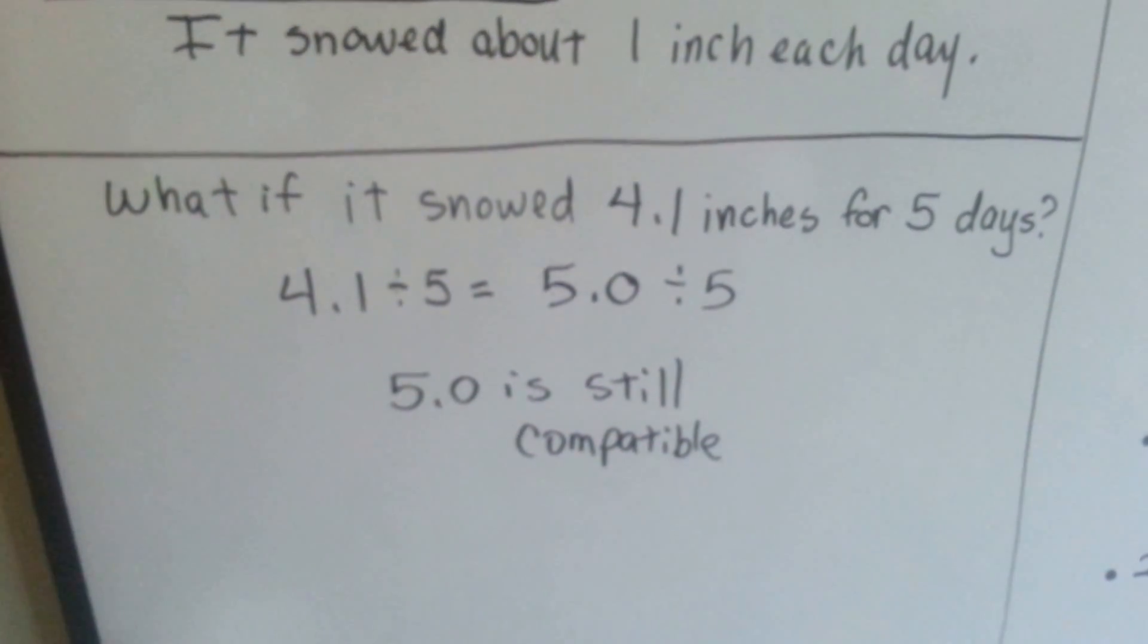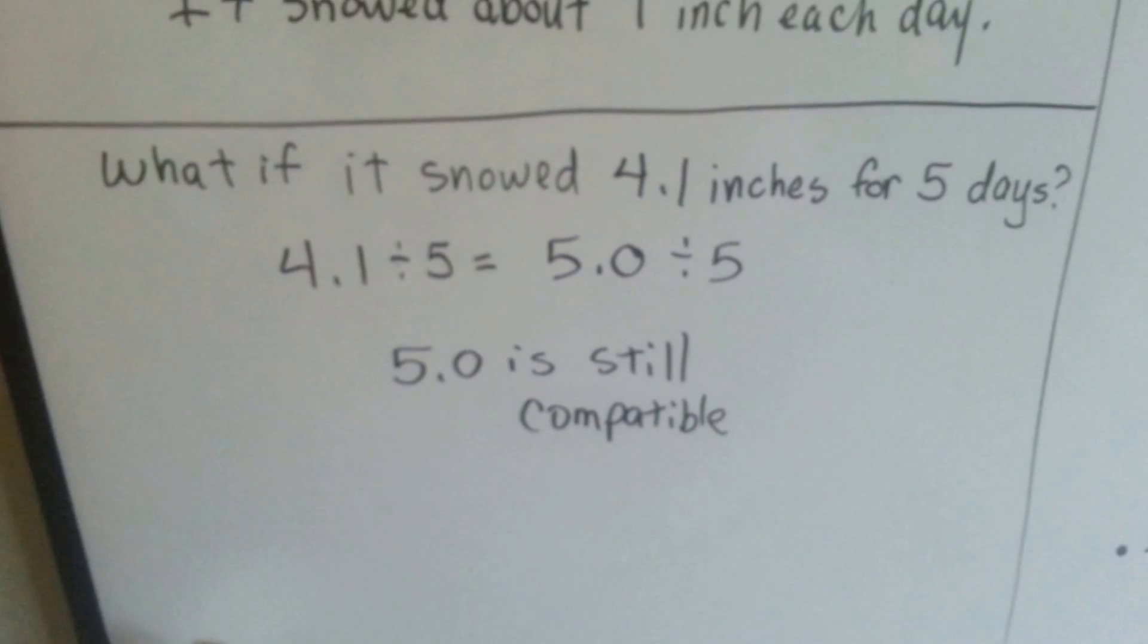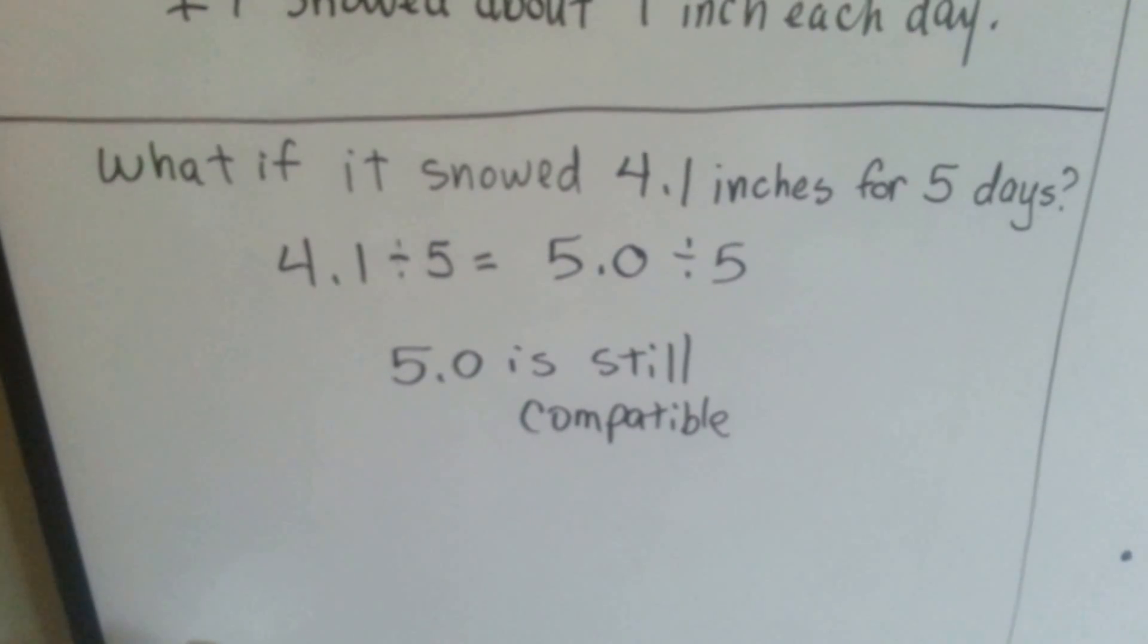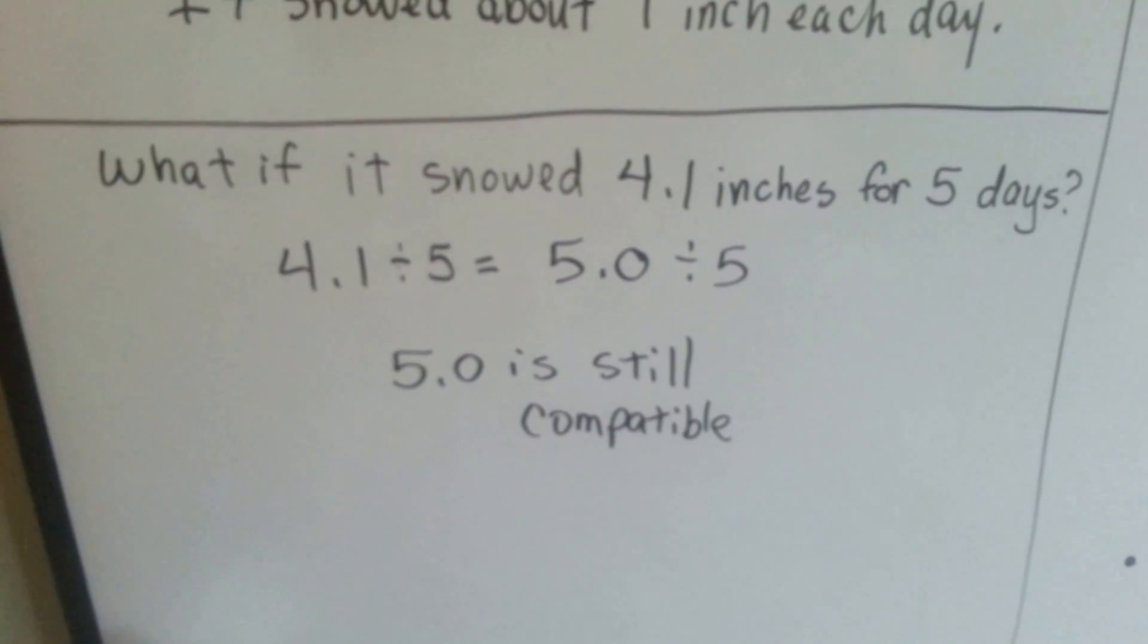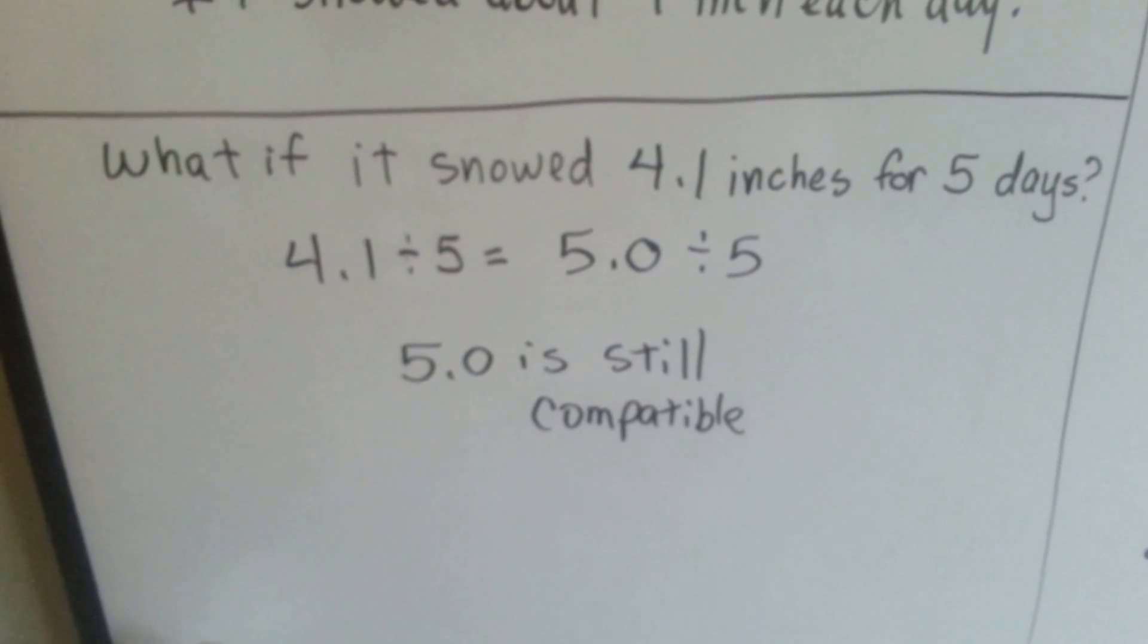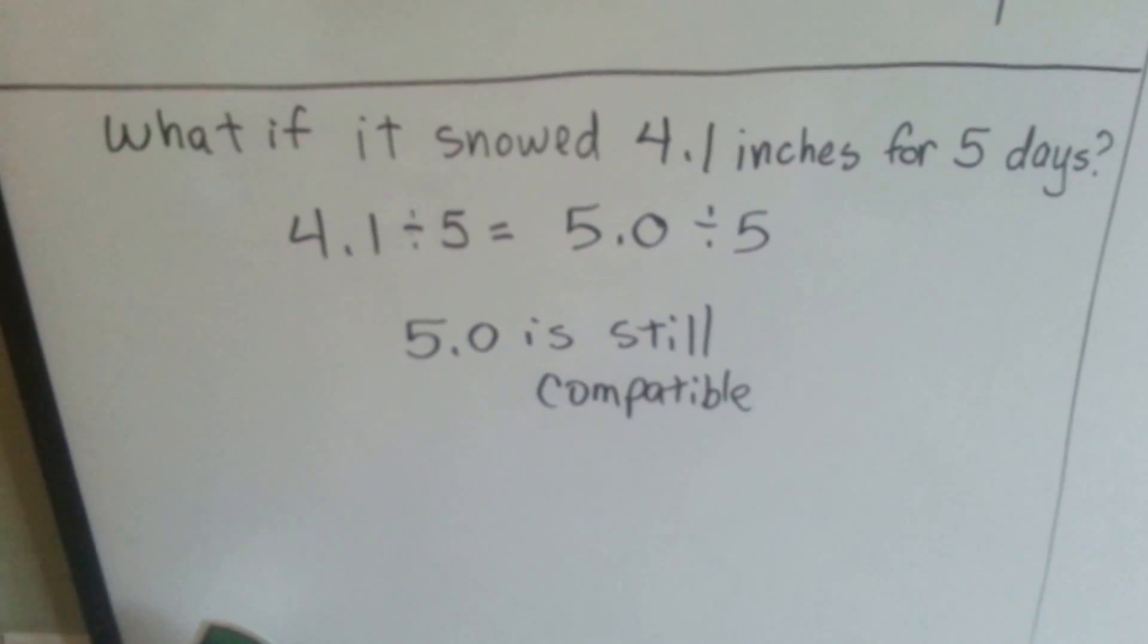What if it snowed 4.1 inches for five days? It would still be smart to use 5 because 5 is compatible with 5, and you could still say it snowed about an inch a day because we're just estimating, right?